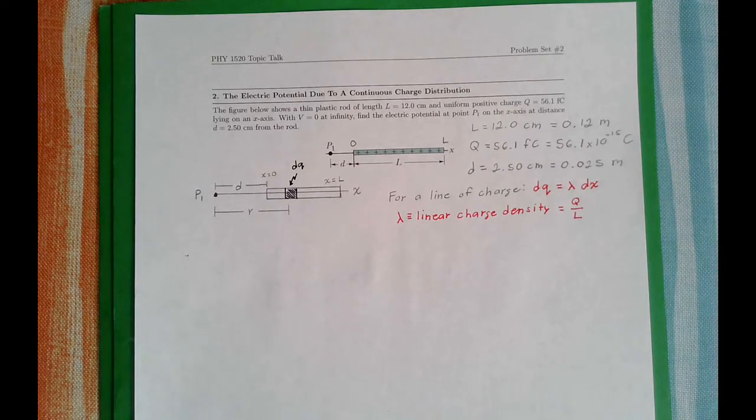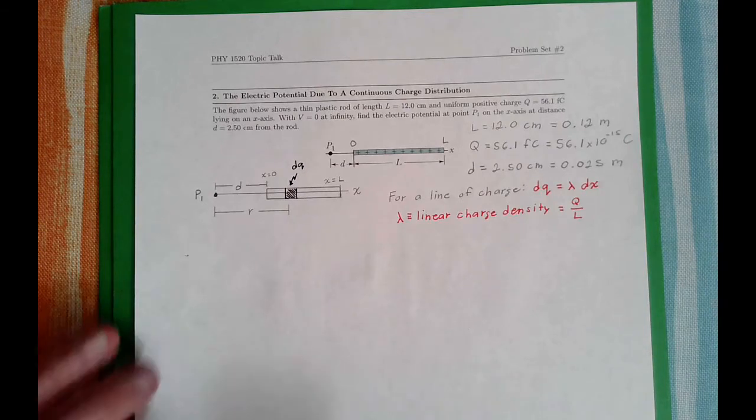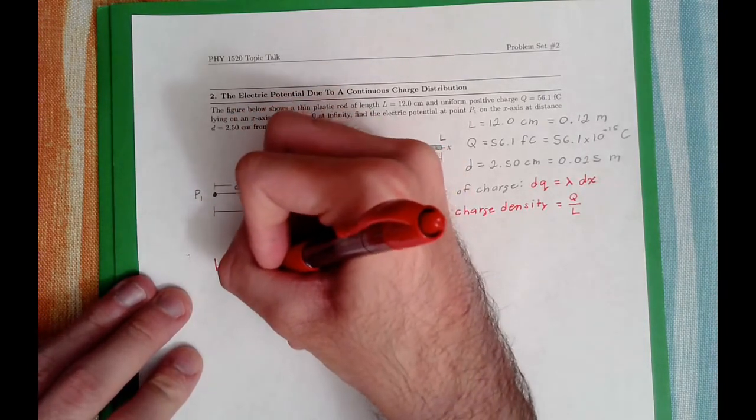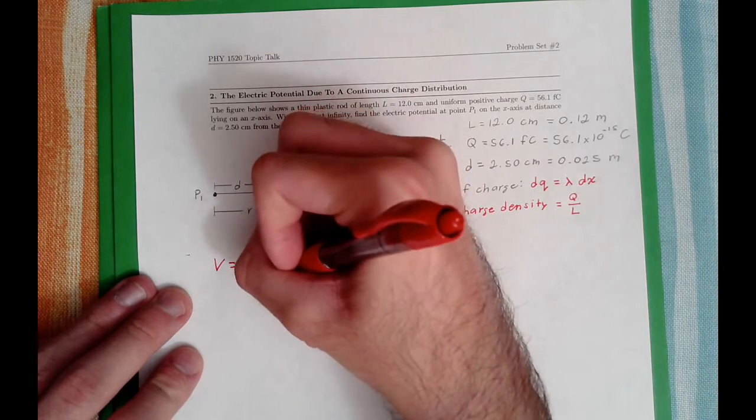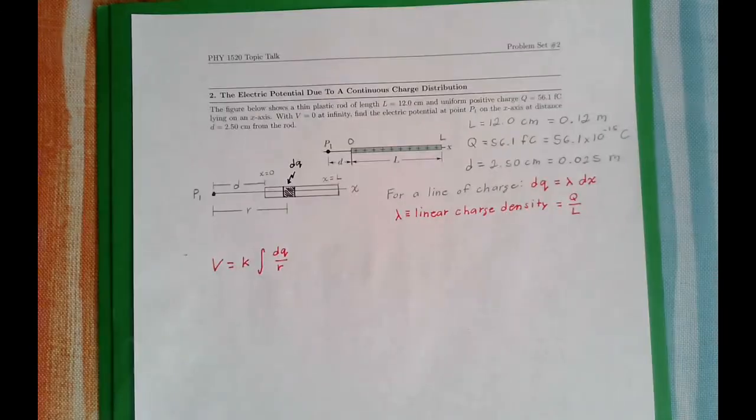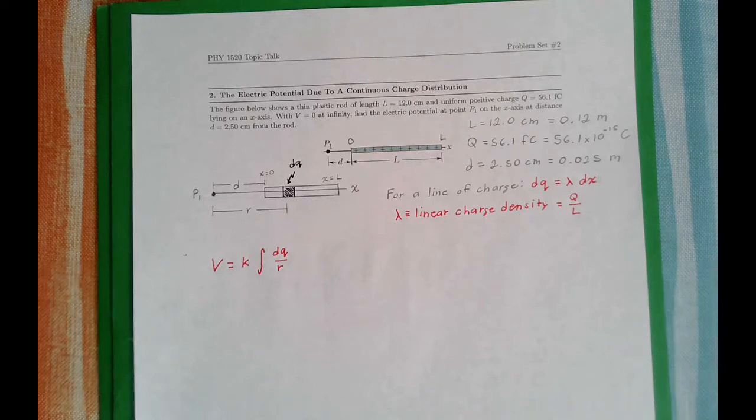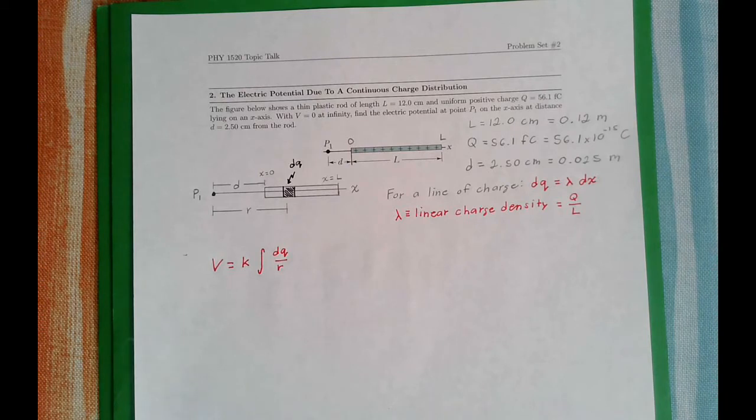So for a continuous charge distribution, we have that the potential is equal to K times the integral of DQ over R. Like I said, it's sort of similar to what we had before with discrete charges. Except now, since the charges are infinitesimally small, to add all of them up we would need to integrate. That's what integration is all about, adding up a whole bunch of very tiny amount of things, adding up all the very tiny amounts of charges called DQ.